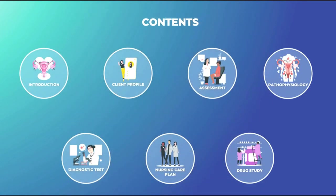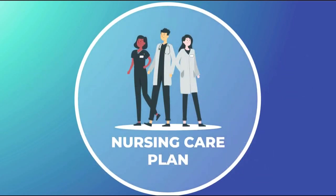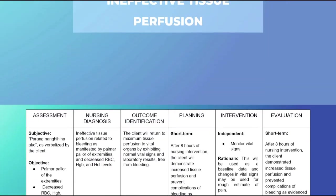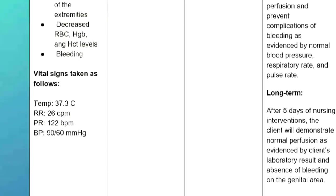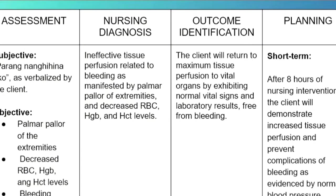We are now moving on to Chapter 4: the nursing care plans. For our first NCP, the subjective assessment is 'parang nanghihina ako,' as verbalized by the client. For the objective assessment: palmar pallor of the extremities, decreased RBC, hemoglobin, and hematocrit levels, and the client shows bleeding. Vital signs: temperature 37.3°C, respiratory rate 26 cycles per minute, pulse rate 122 beats per minute, blood pressure 90/60 mmHg. The nursing diagnosis is ineffective tissue perfusion related to bleeding, as manifested by palmar pallor of extremities and decreased RBC, hemoglobin, and hematocrit levels.